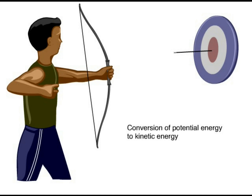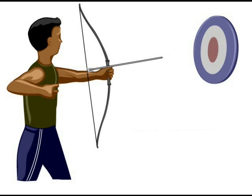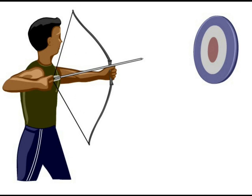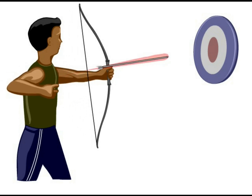When the arrow hits the target its motion ceases — but where did that energy go? When energy is converted from potential to kinetic energy, some of it can be used to do work, but some ends up as heat, which is the random motion of atoms and molecules. As the arrow flies through the air, heat is generated by friction. When the arrow strikes the target, all the energy becomes heat energy, which rapidly spreads out into the air. Heat energy is a very disordered kind of energy with the highest amount of entropy of any kind of energy.